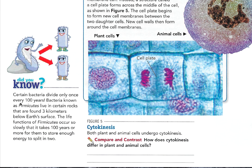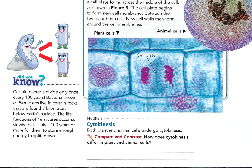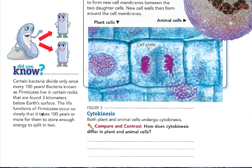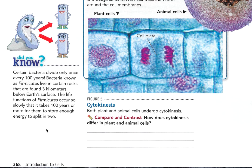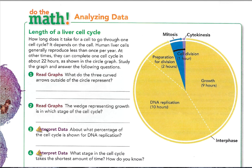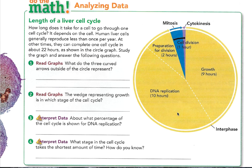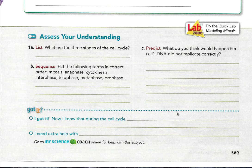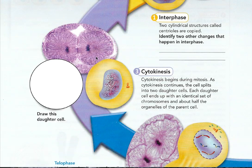Did you know certain bacteria divide only once every 100 years? Bacteria known as firmicutes live in certain rocks found 3 kilometers below the Earth's surface. Life functions of firmicutes occur so slowly that it takes 100 years or more for them to store enough energy to split in two. Looking at this diagram, you can see that the cell spends most of its time in interphase — preparation, growth, and DNA replication. That's the end of the reading. Thank you for listening. Have a great rest of your day.